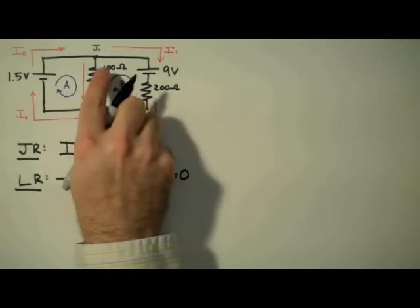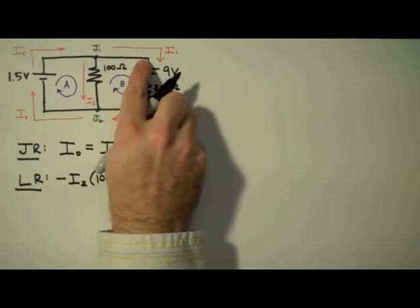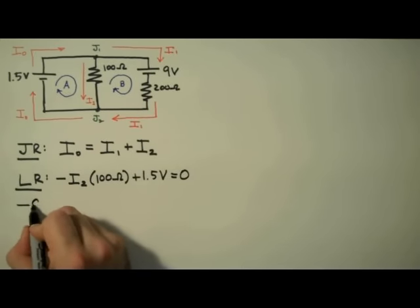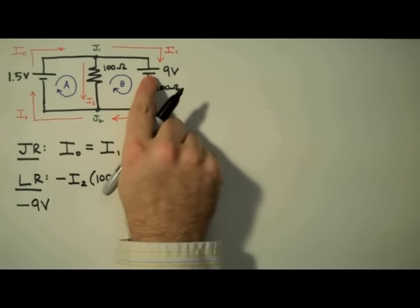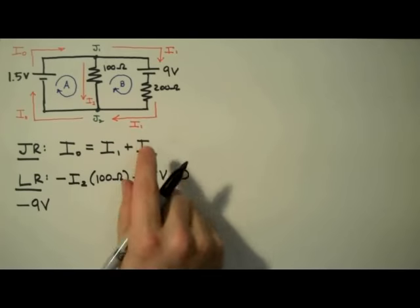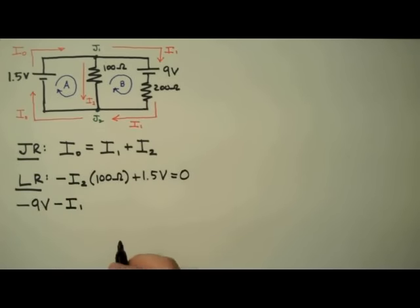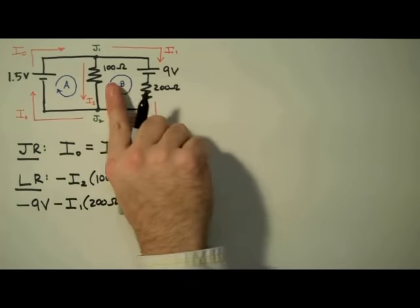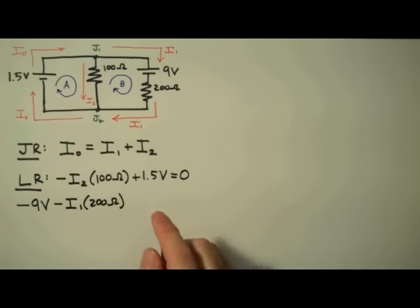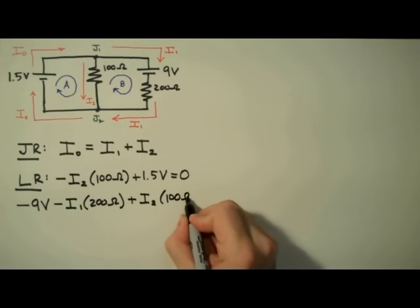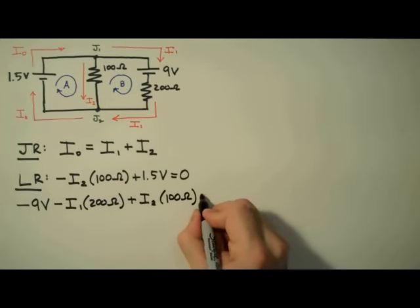Next we use the loop rule to analyze loop B. Starting again in the upper left-hand corner, we travel clockwise until we get to the first component — it's a 9 volt battery. Traveling from high to low, that means a voltage drop: minus 9 volts. Continuing around loop B, we get to the 200 ohm resistor. We're traveling clockwise, which is with the direction of I1 — that's going to indicate a voltage drop, minus IR. So I write minus I1 times 200 ohms. Then we continue up the middle leg until we get to the 100 ohm resistor. Here we're traveling up the leg whereas the current is traveling down — this indicates a voltage lift, plus IR. So I write plus I2 times 100 ohms. Complete loop B, set this equal to 0.